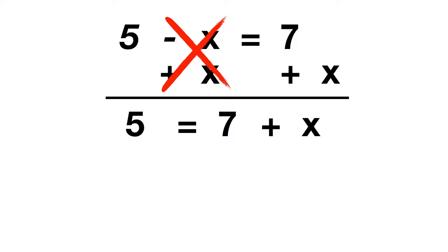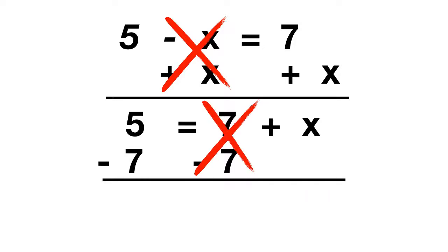The next thing we'll need to do is cancel out the 7. We can do that by subtracting 7 from both sides. When we solve this part of the equation, 7 minus 7 cancels out, and so we're left with just x.